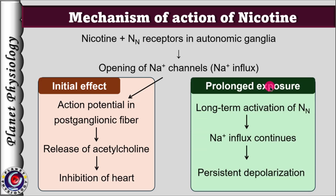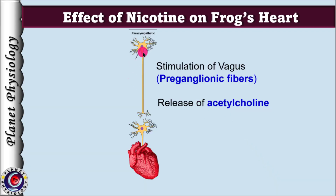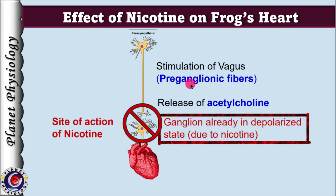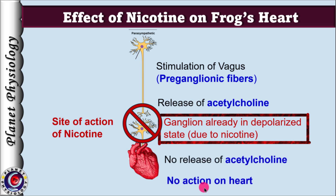This is the initial stimulatory action of nicotine leading to decrease in heart rate and force of contraction. However, with prolonged exposure, nicotine keeps the nicotinic receptor activated for a longer duration. As a result, sodium influx continues and the ganglion fails to repolarize — this is called persistent depolarization. When we stimulate the vagus after addition of nicotine, we are activating preganglionic fibres. They release acetylcholine at the ganglion, but since the receptors are already in an active state, no signal is transmitted to the postganglionic fibres and the heart does not stop despite vagal stimulation.